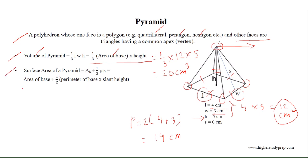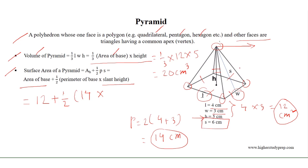The surface area of the pyramid is equal to the area of the base, which is 12 cm², plus half of the perimeter of the base, which is 14 cm, multiplied by the slant height, which is given as 6 cm. The slant height is the height of the triangular faces of the pyramid. For this pyramid the slant height equals 6 cm. Therefore the surface area equals 12 plus half of 84, which results in 54 cm².